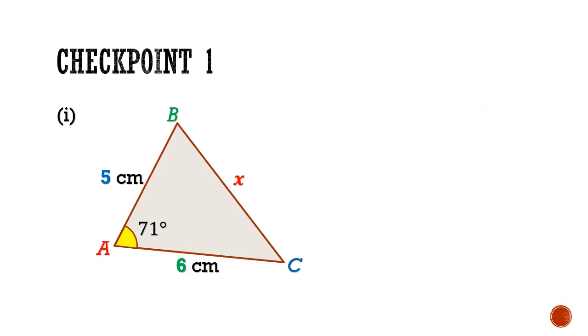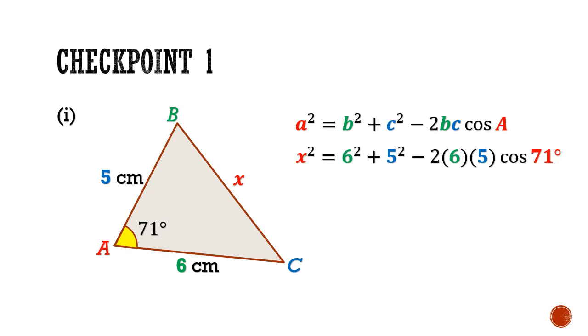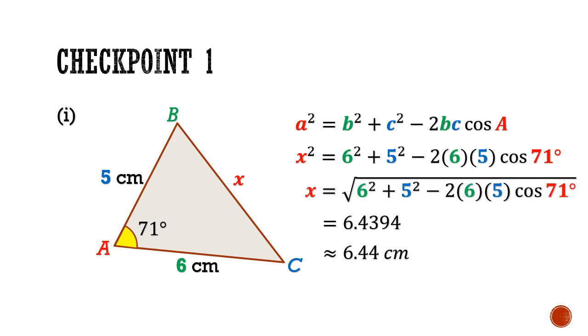Let's go through part 1. In this question, we are able to apply the cosine rule. This is because we have the two sides, 5 cm and 6 cm, as well as the angle in between, 71 degrees. Since the unknown side x is opposite the included angle, we can substitute a = x and b = 6, c = 5, and angle A = 71 degrees. Then we just solve this equation and we will get 6.44 cm as the unknown side x.